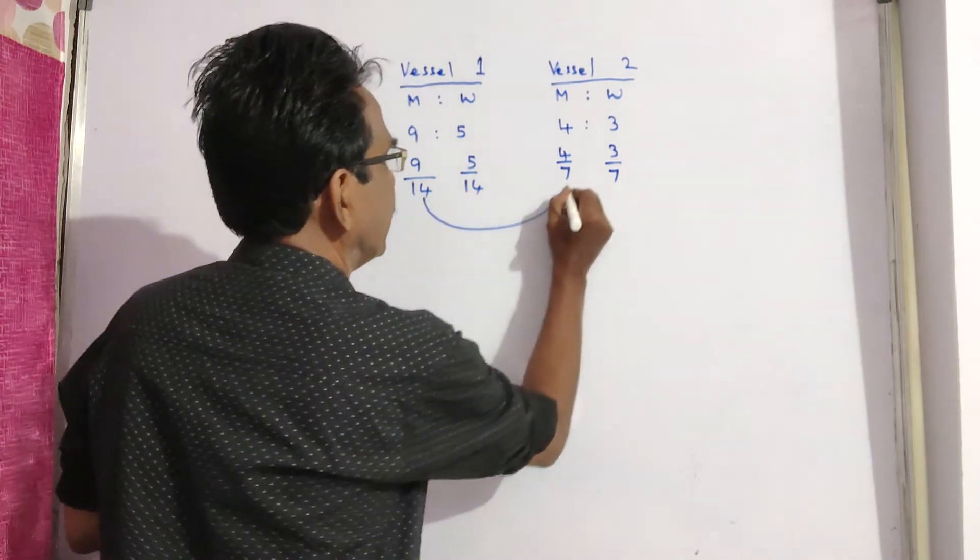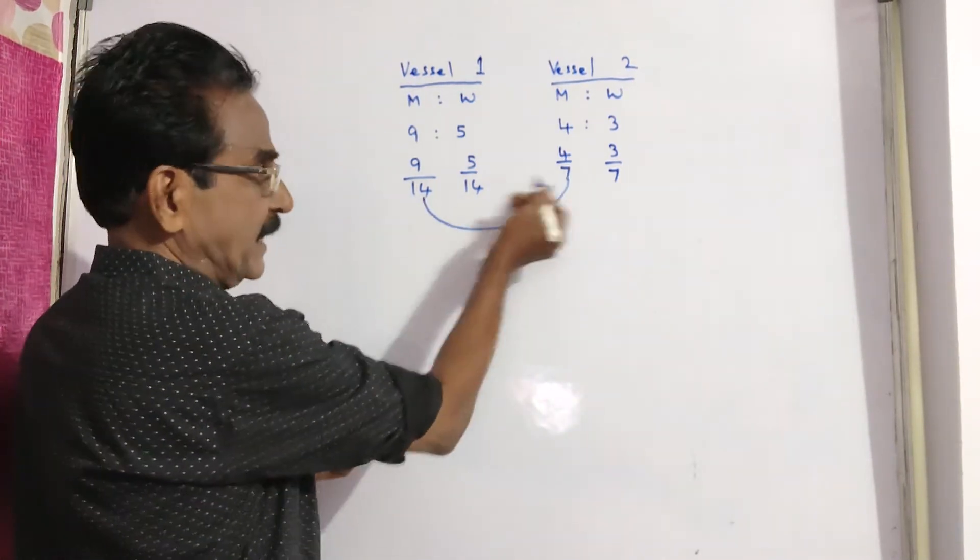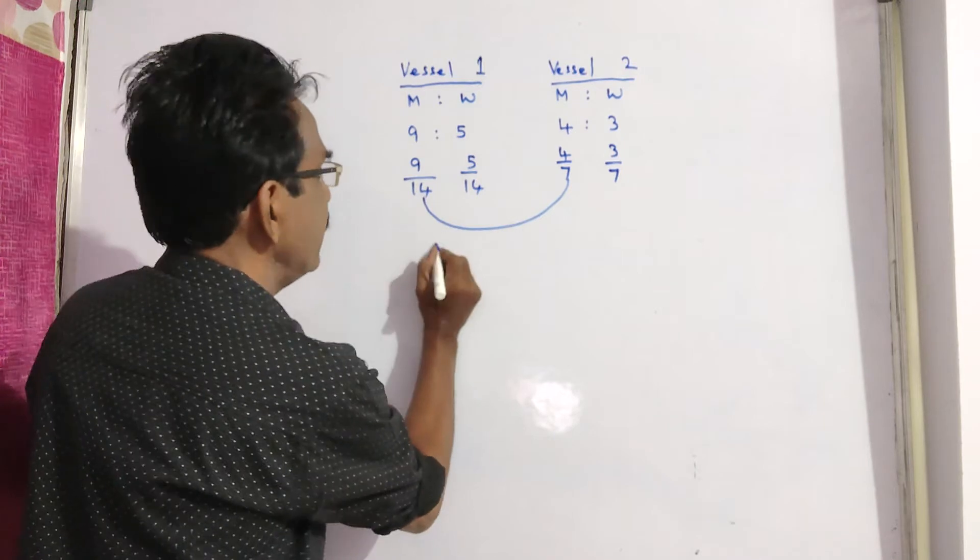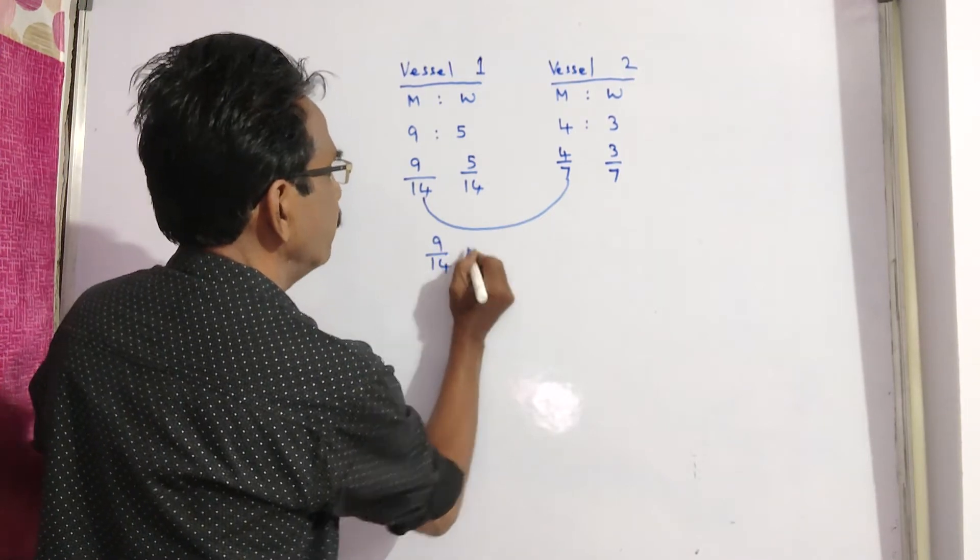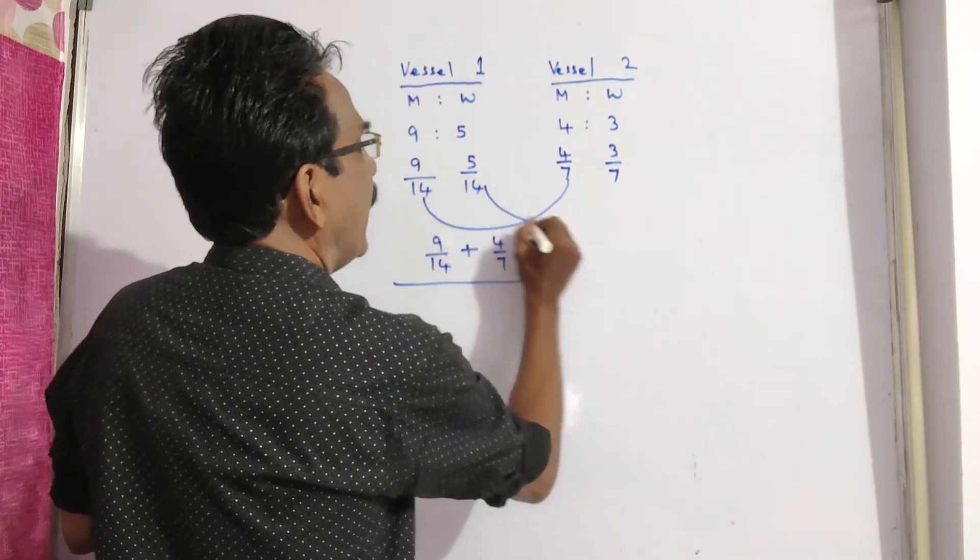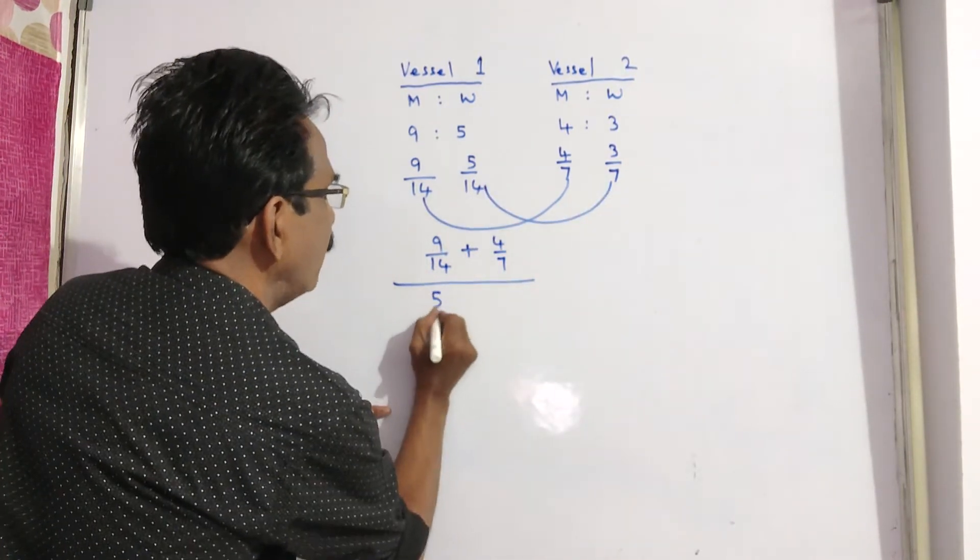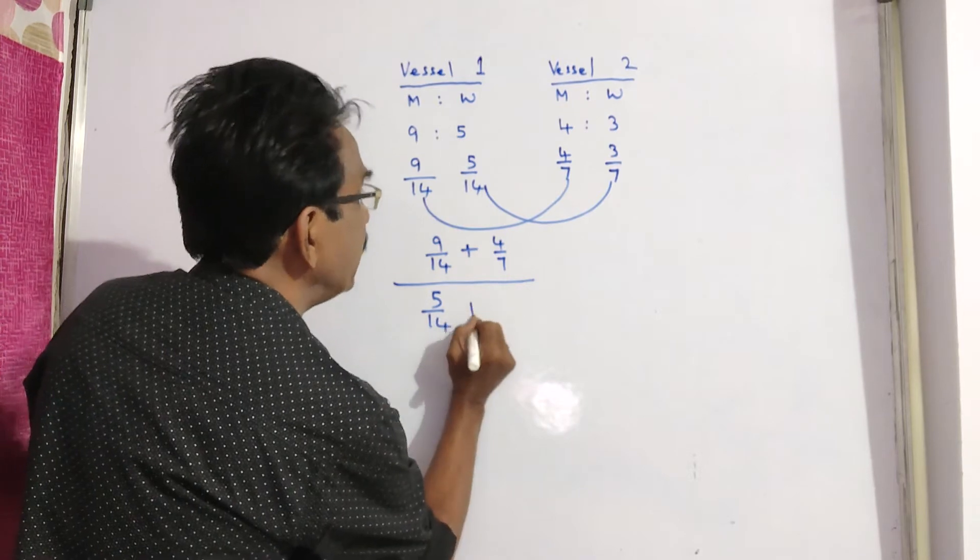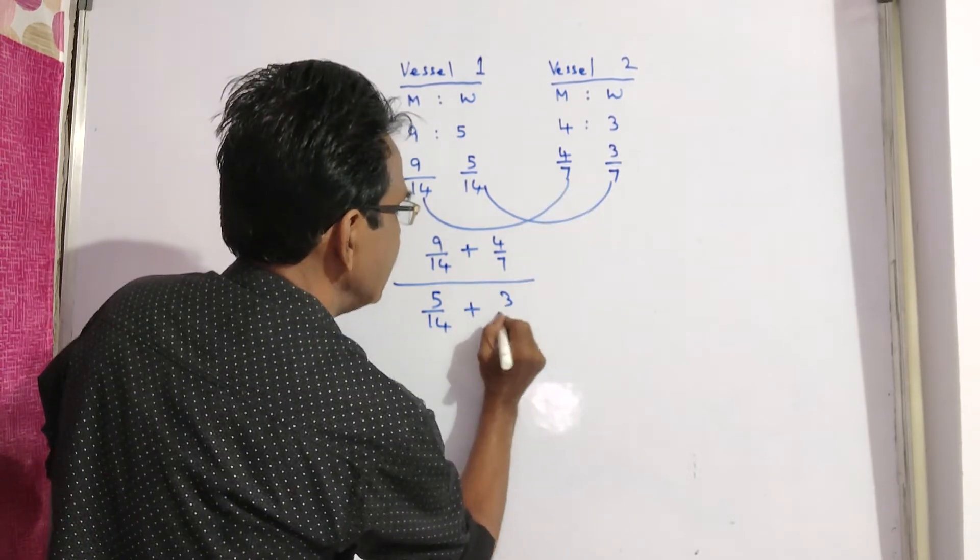Then the total milk in the mixture is 9 by 14 plus 4 by 7, and total water is 5 by 14 plus 3 by 7.